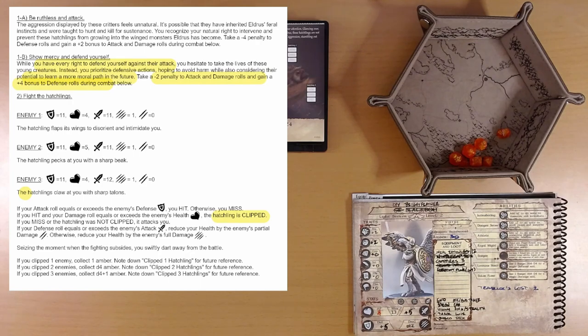Eleven plus five is sixteen, plus four is twenty. Because we have this defense bonus. So we equal or exceed the attack. So we reduce our health by the enemy's partial damage, which is zero.